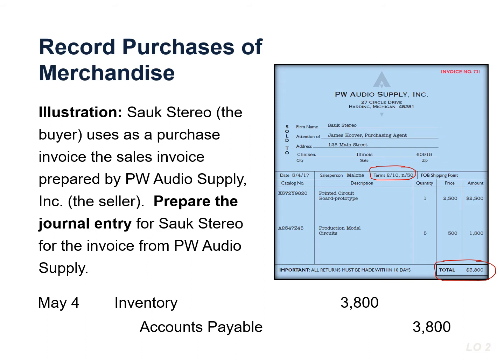Not all purchases are debited to inventory. Companies record purchases of assets acquired for use and not for resale, such as supplies and equipment, as increases to specific asset accounts rather than to the inventory account. For example, to record the purchase of office supplies we would increase or debit supplies.